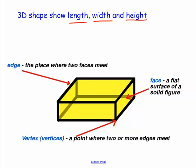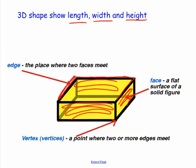Here's a three-dimensional shape — this is a rectangular prism. I'm looking at the edges, the faces, and the vertices. The edges are where two faces meet — that is called the edge. The face is the flat surface, and in most cases there are several faces. And then the vertices are the points where the two edges come together.